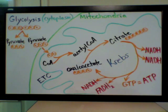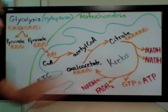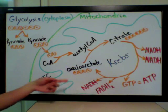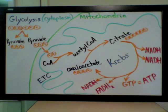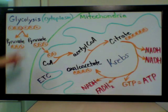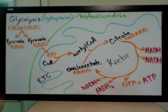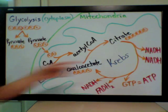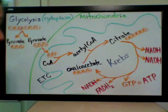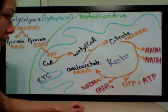In the Krebs cycle, we lose two carbons as carbon dioxide — here and here — so we end up with four carbons at the end again. We also lose one carbon during pyruvate oxidation. Each time we lose a carbon, we're exhaling it as carbon dioxide. The Krebs cycle produces NADH three times and one FADH2 molecule per turn of the cycle.